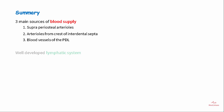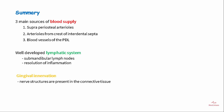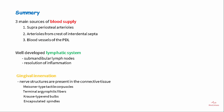The gingiva has a well-developed lymphatic system which drains into the submandibular lymph nodes and helps in the resolution of inflammation. The nerve structures present in the connective tissue of the gingiva are the Meissner-type tactile corpuscles, terminal argyrophilic fibers, Krause-type end bulbs, and the encapsulated spindles.